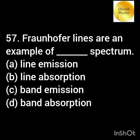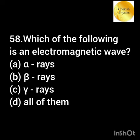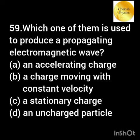Fraunhofer lines are an example of a dash spectrum. Which of the following is an electromagnetic wave? Which one produces a propagating electromagnetic wave?